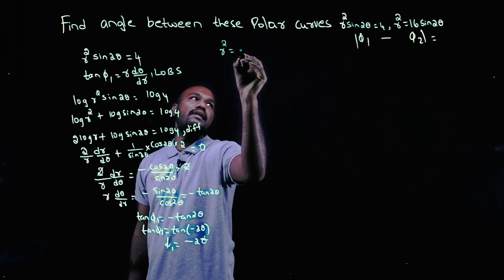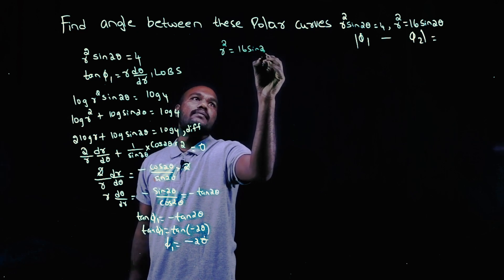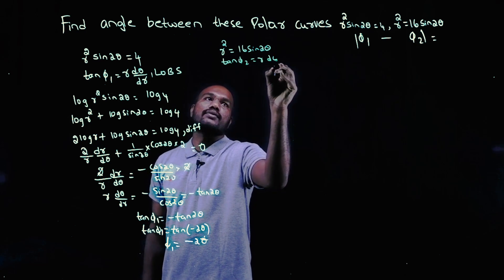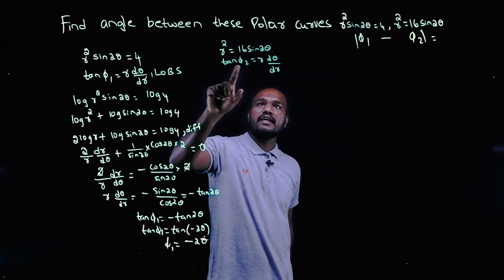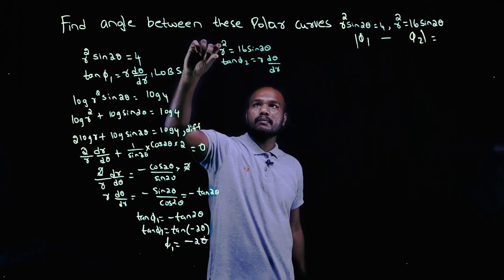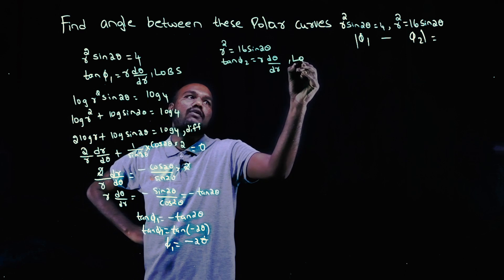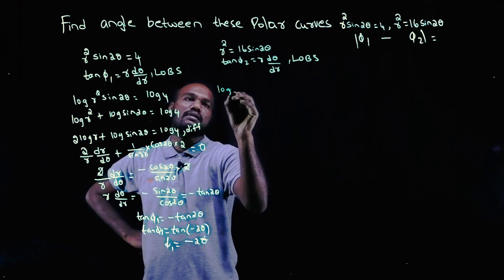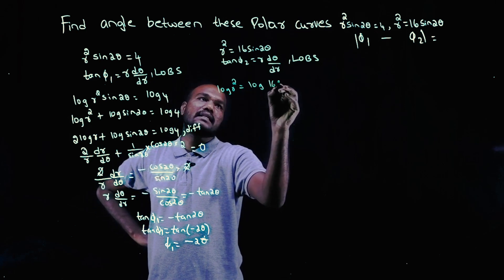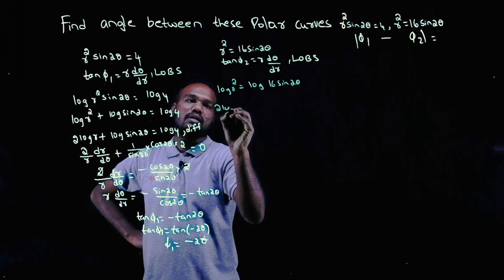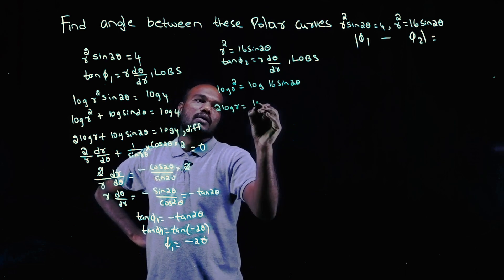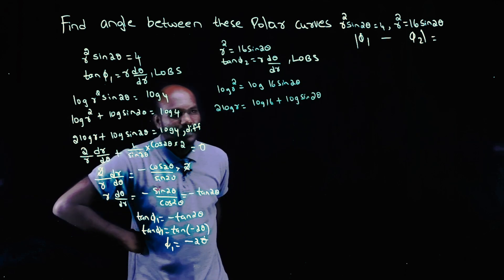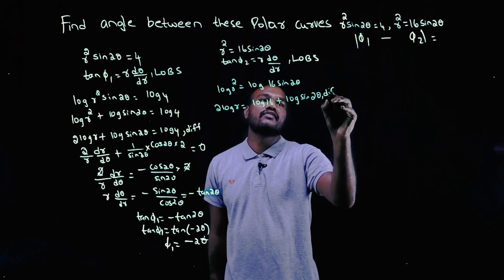Now let's take the second curve: r² = 16·sin2θ. Again to find φ2 we need tan φ2 = r·dθ/dr. Since r² is complicated we take log on both sides: log(r²) = log(16·sin2θ), so 2·log r = log 16 + log(sin2θ). Now we differentiate.